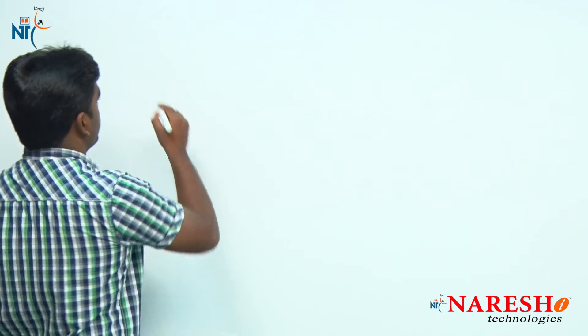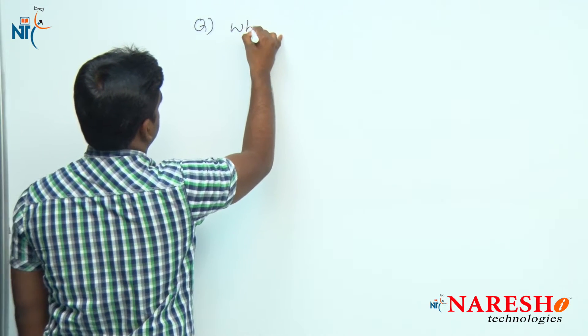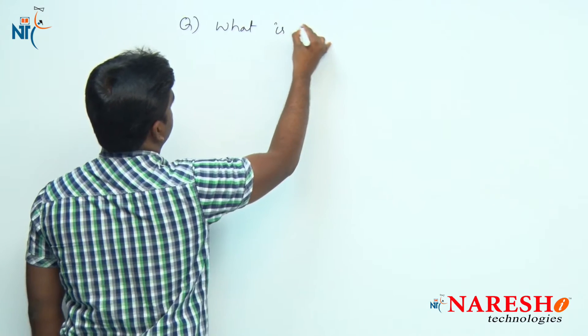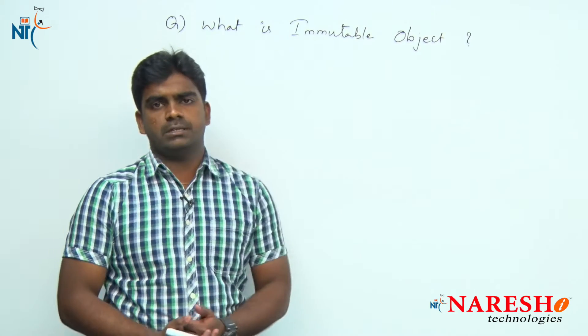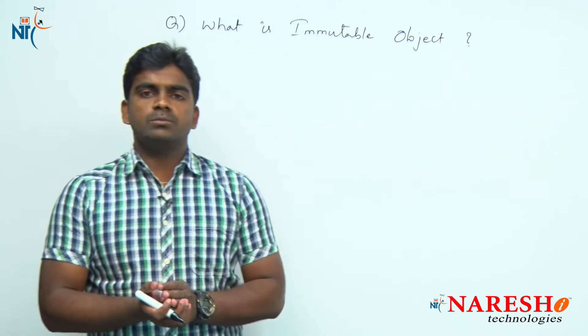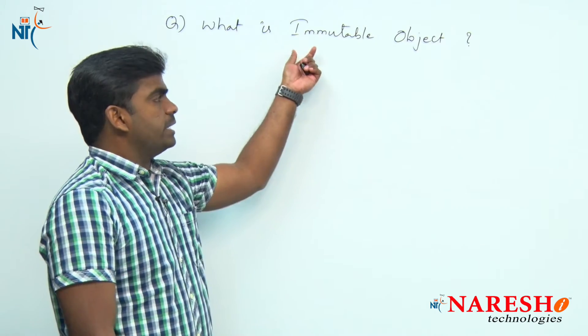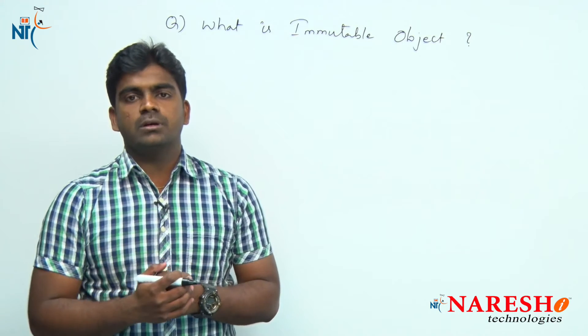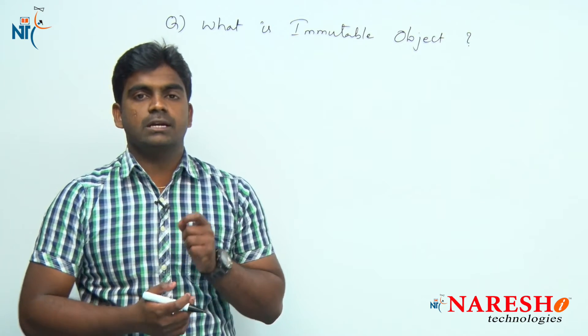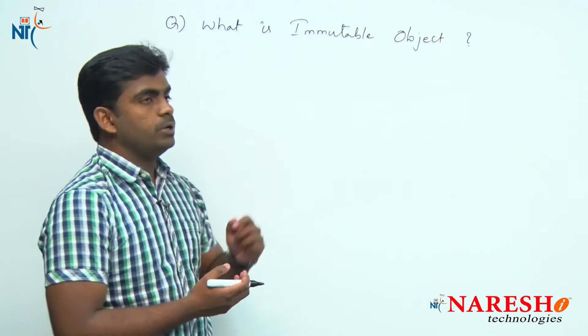Hi everyone, welcome to Nourish Technologies, this is Srinivas. In this session we are going to discuss one important question: what is an immutable object in Java? Immutable object means once you create the object with a particular state, with some values, the state cannot be modified. That is what we call an immutable object.